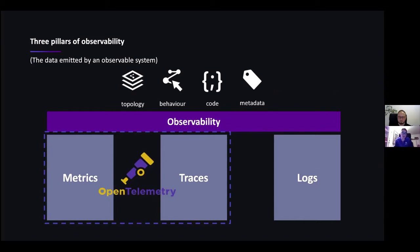Real-time topology discovery and dependency mapping, user behavior analytics, code-level visibility, and auto-detection of metadata related to the processes that run in your environment are just a few examples that will unlock automatic and intelligent observability for complex systems.